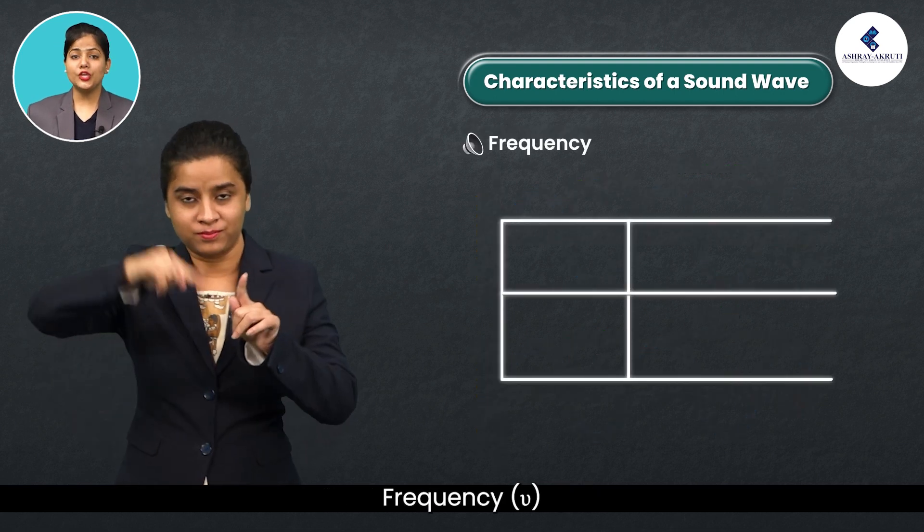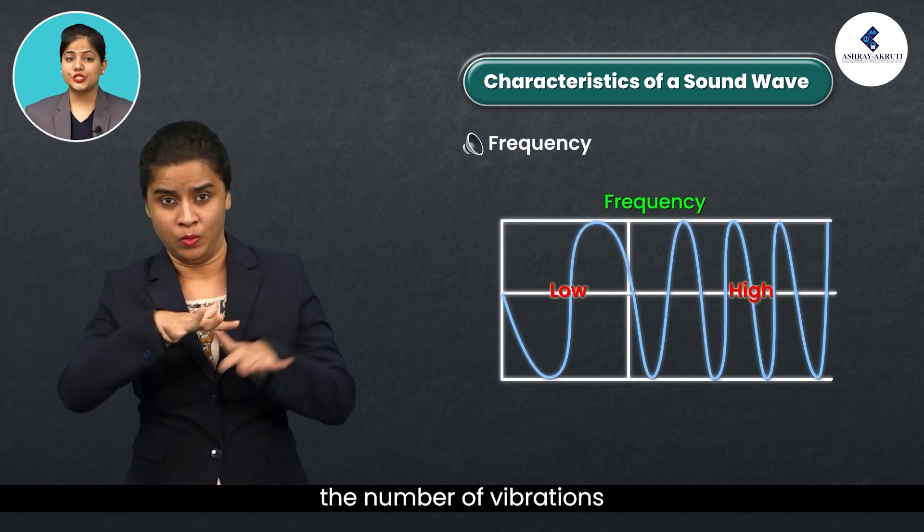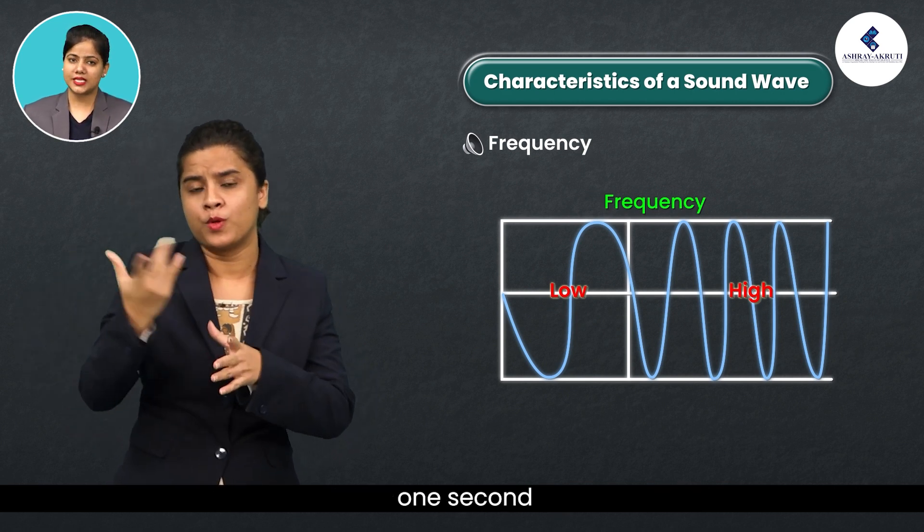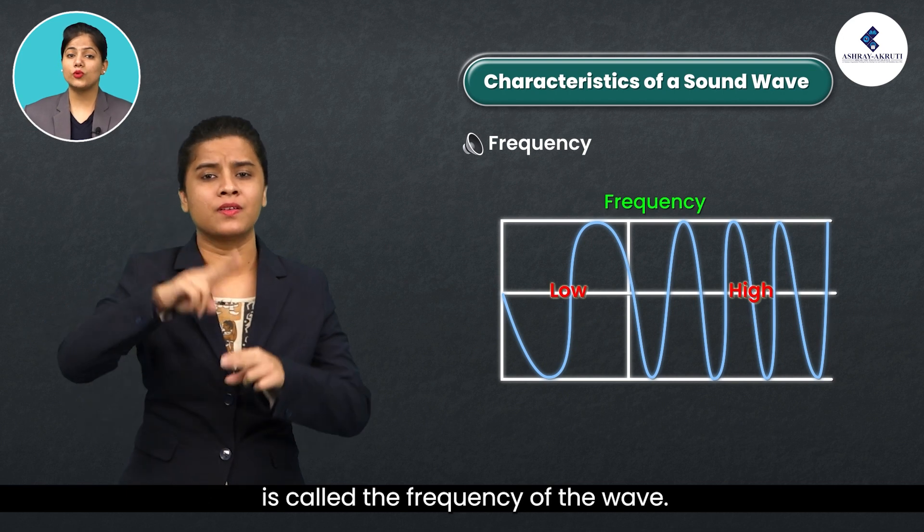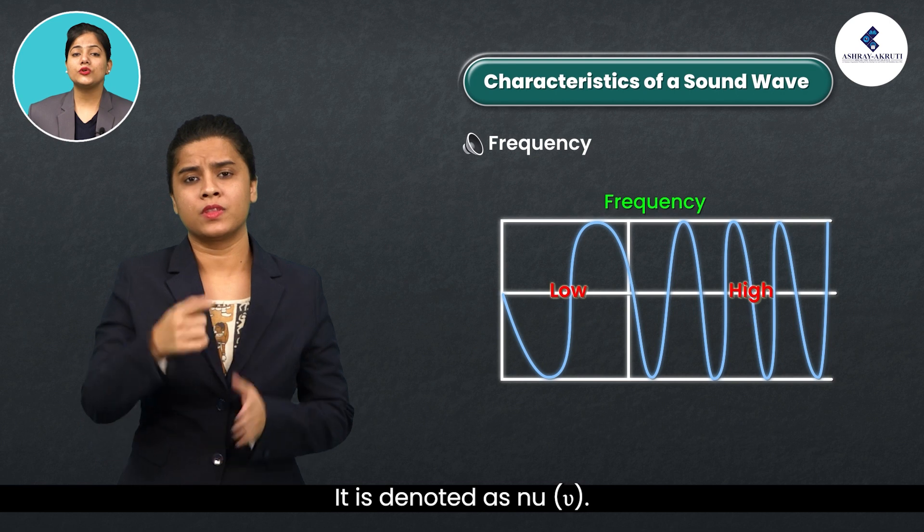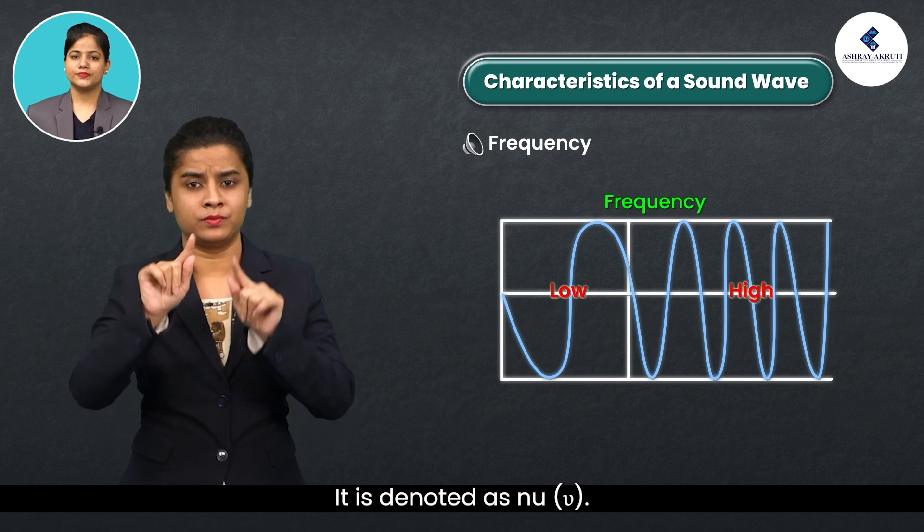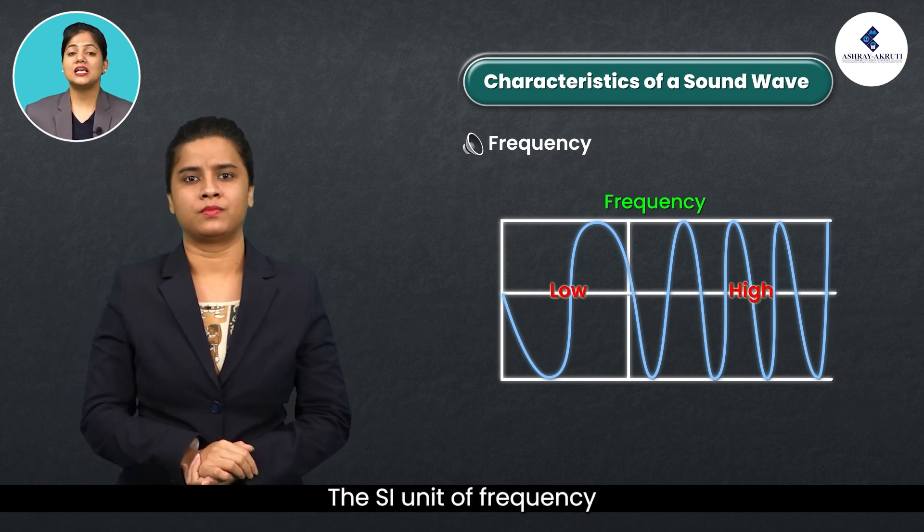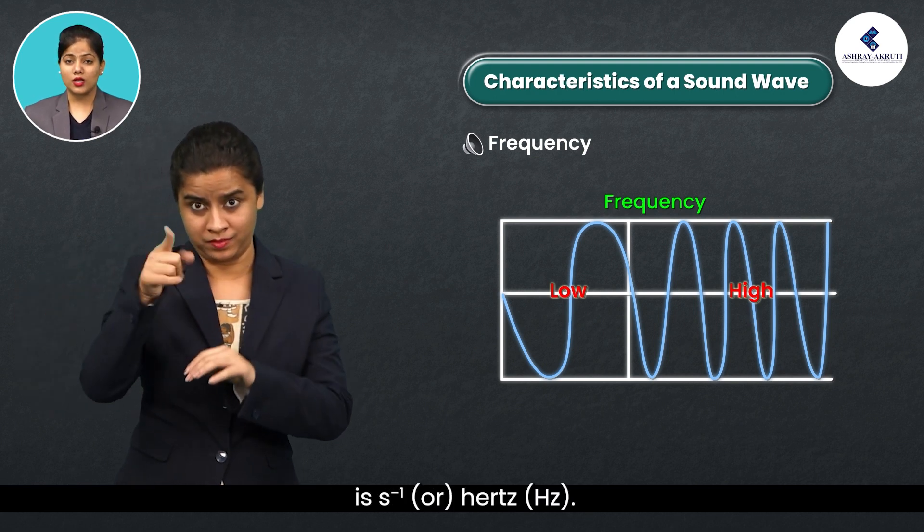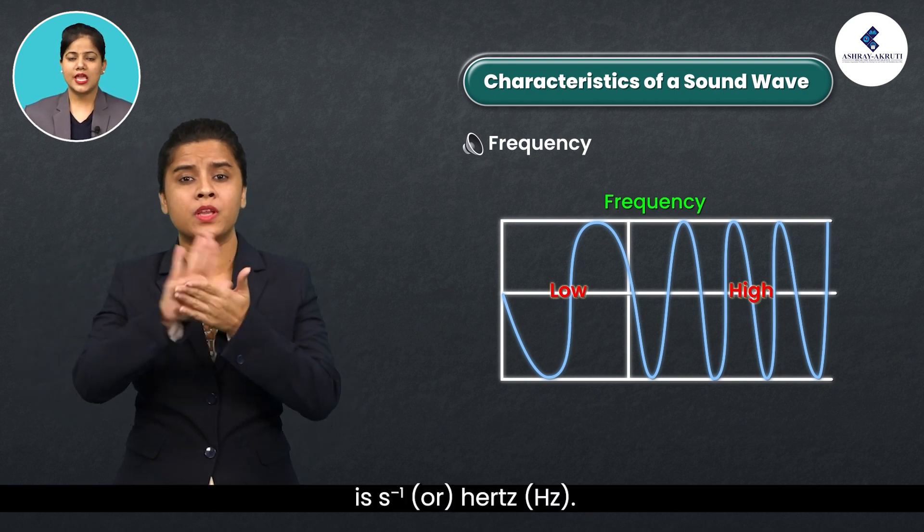Frequency (nu): the number of vibrations, complete waves or cycles produced in one second is called the frequency of the wave. It is denoted as nu. The SI unit of frequency is s to the power minus 1 or hertz (Hz).